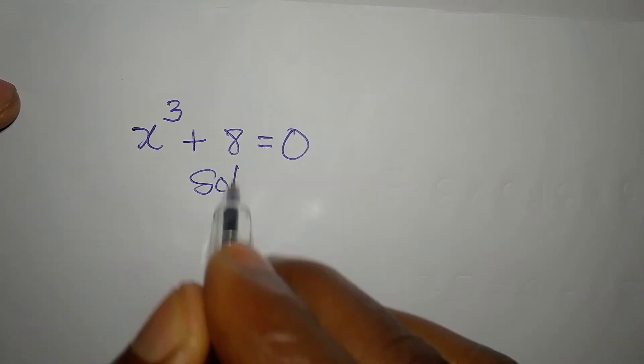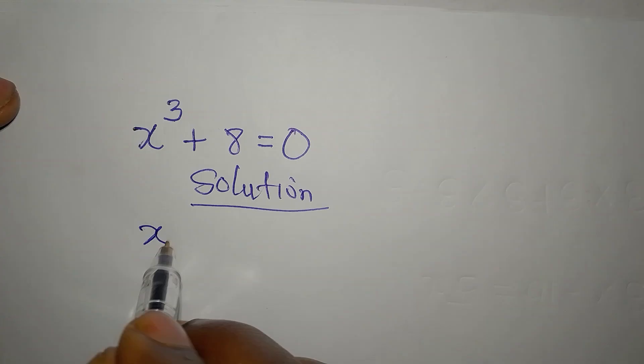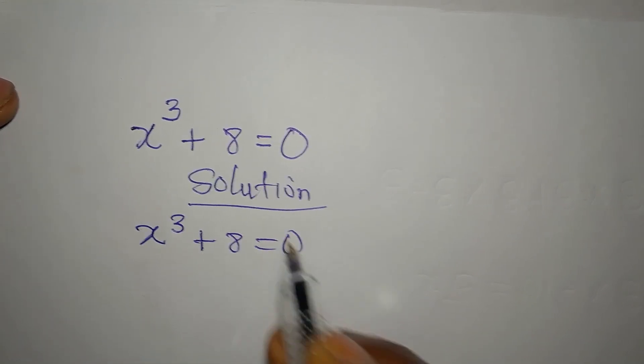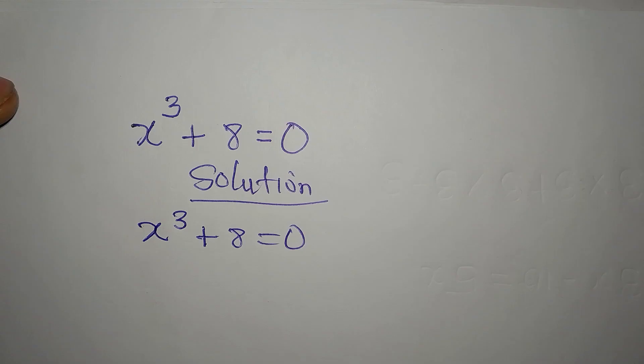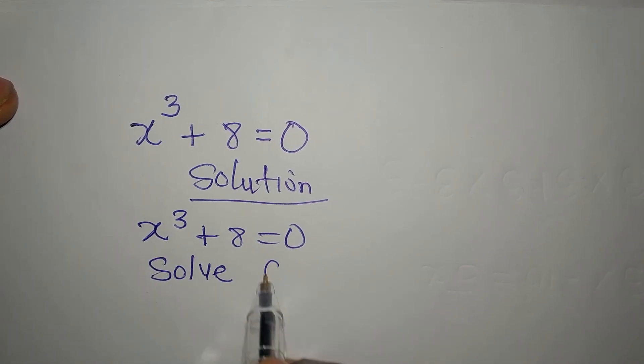Hi. Let's solve this very quickly. x to the power of 3 plus 8 equals 0. Remember, we are to solve completely. Solve completely.